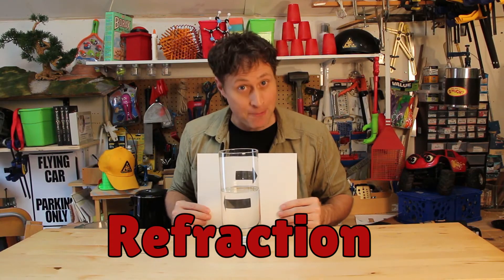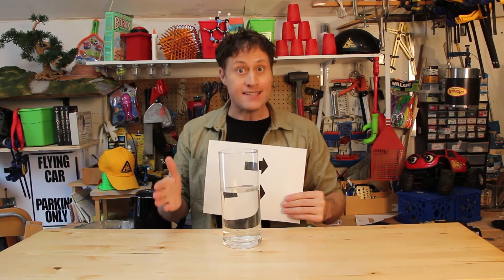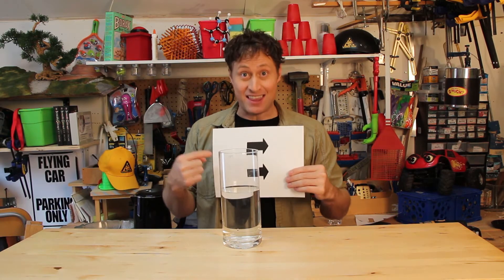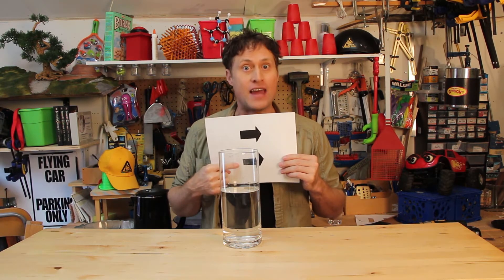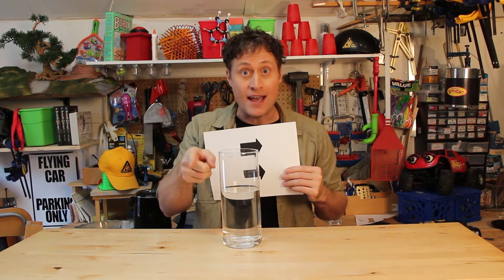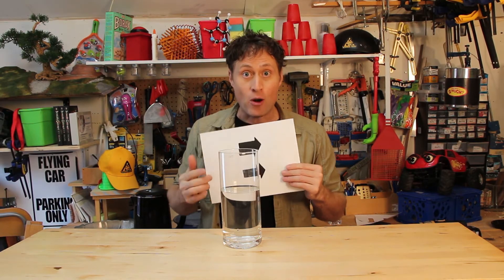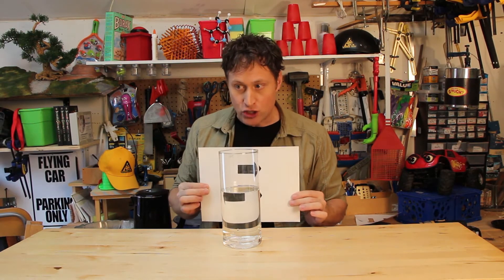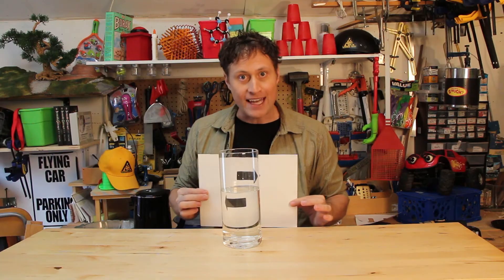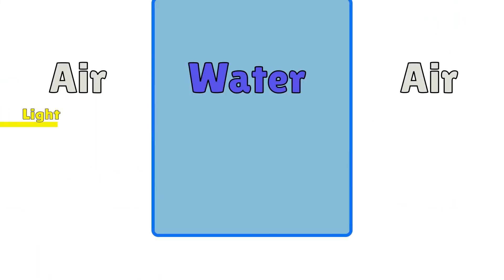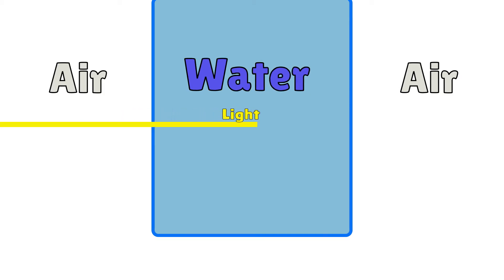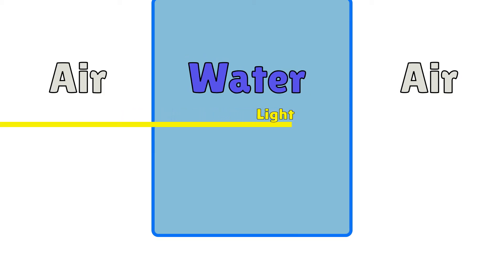Refraction is something that happens to light. When you see something, you're not actually seeing the thing — you're seeing the light reflected off that thing that travels to your eyes. And on the way there, refraction can change what that looks like. It all has to do with density. Light goes slower when it travels through something more dense. Water is more dense than air, so light goes slower.